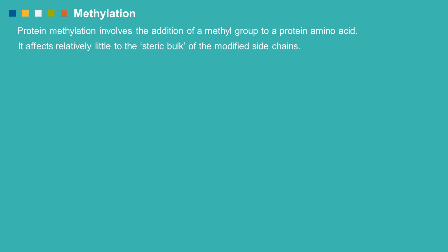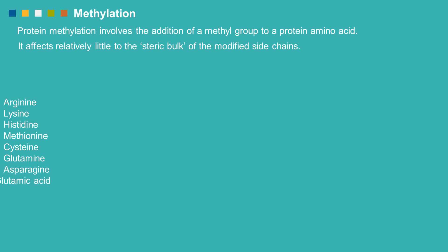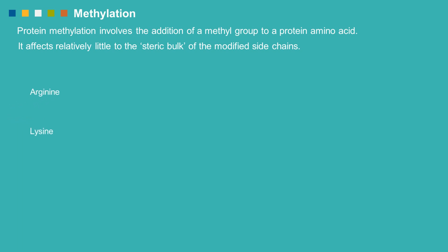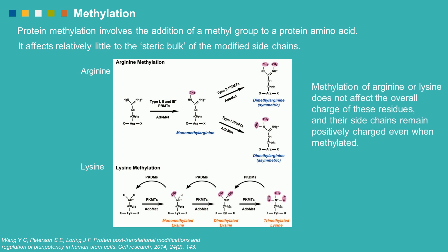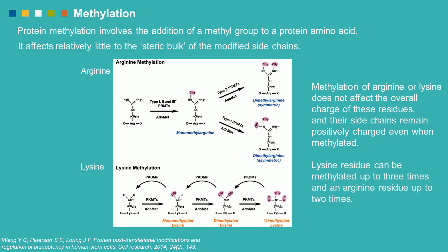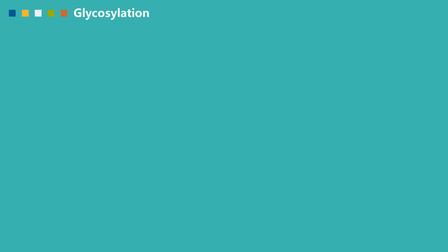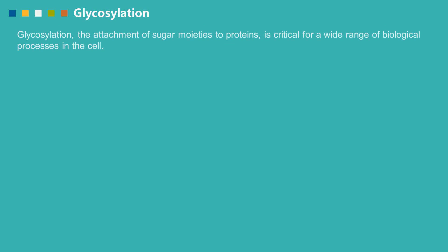These amino acids include arginine, lysine, histidine, methionine, cysteine, glutamine, asparagine, glutamic acid, and aspartic acid. Among them, arginine and lysine are by far the most commonly methylated residues. Methylation of arginine or lysine does not affect the overall charge of these residues, and their side chains remain positively charged even when methylated. A lysine residue can be methylated up to three times, and an arginine residue up to two times.